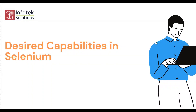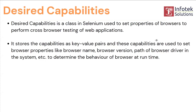Here we'll see what Desired Capabilities are and how we use them. Desired Capability is a class in Selenium used to set properties of the browser to perform cross-browser testing of web applications. It stores the capabilities as key-value pairs, and these capabilities are used to set browser properties like browser name, browser version, path of browser drivers in the system, etc., to determine the behavior of the browser at runtime.